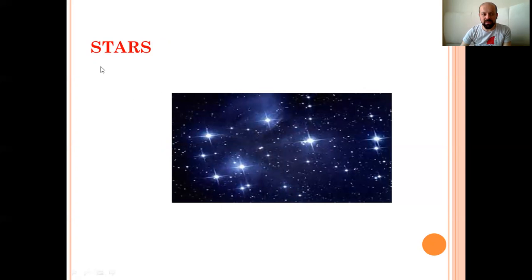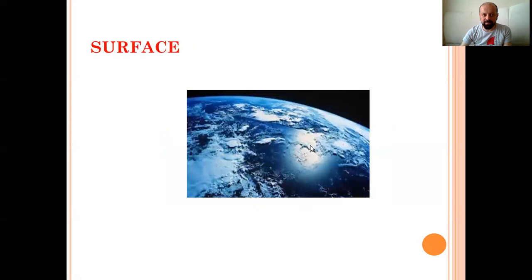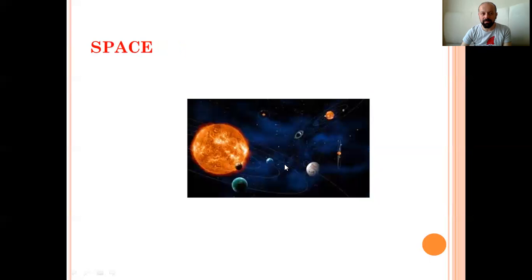Stars. Yes, you can know this word. Stars. Yıldızlar. Surface. In Turkish meaning yüzey. The Earth's surface. The Earth's surface you can see in the picture. Surface. Space. Uzay in Turkish meaning. Yes. Space.